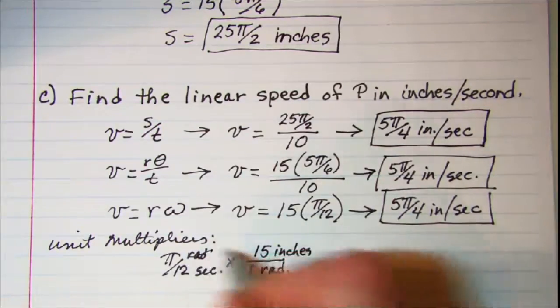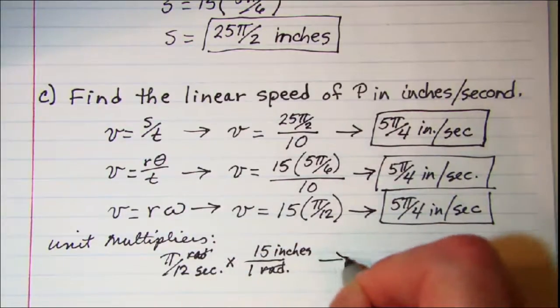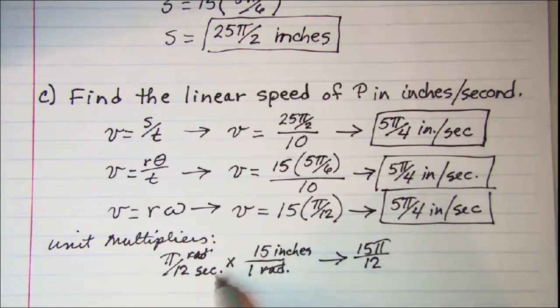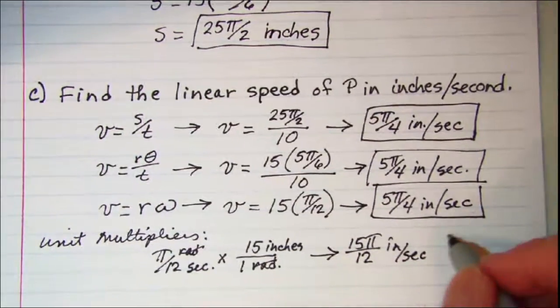Now these radians cancel off and I have 15π over 12 and that's inches per second which reduces to 5π over 4.